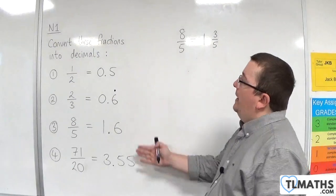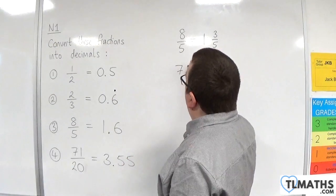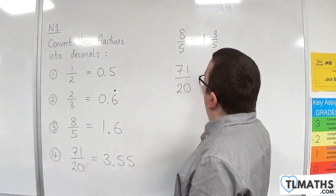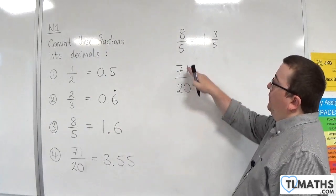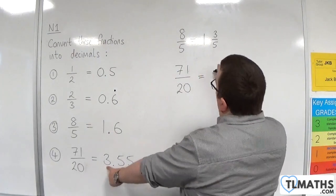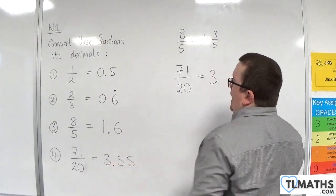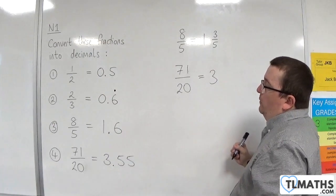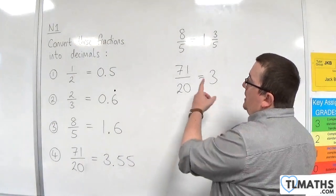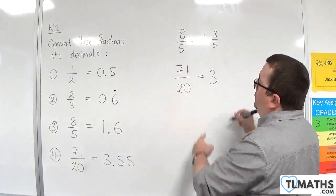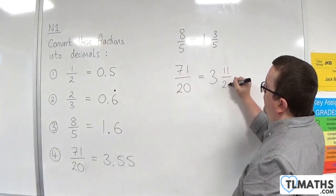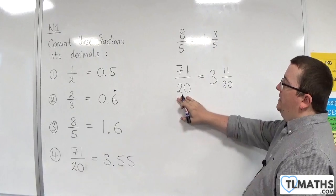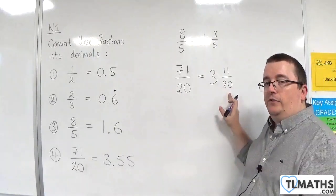And if you wanted to write that as a mixed number, 71 over 20. Well, 20 goes into 71 three times. And what have we got left over? Well, 20, 40, 60, which means that there are 11 twentieths left over. So, 71 over 20 is the same as 3 and 11 twentieths.